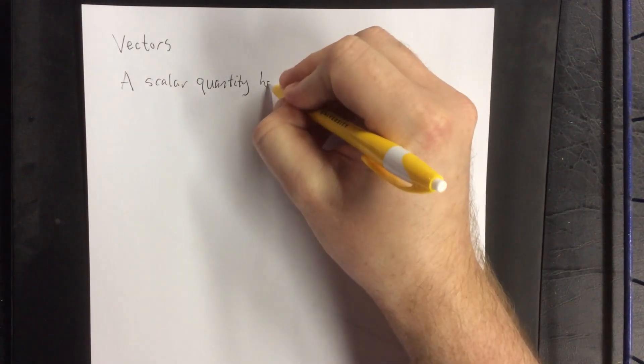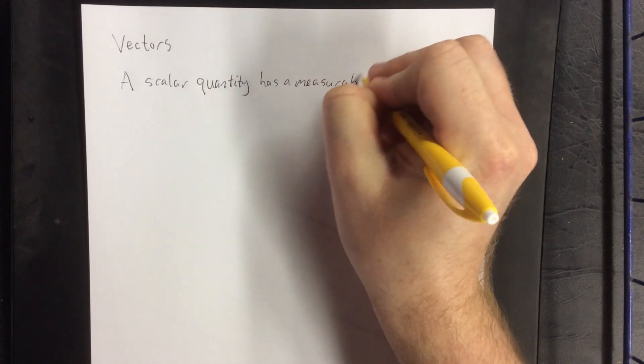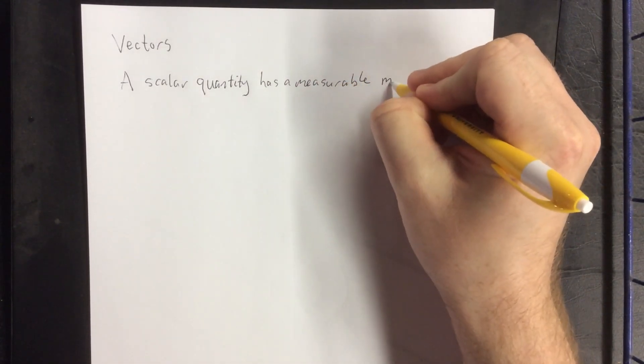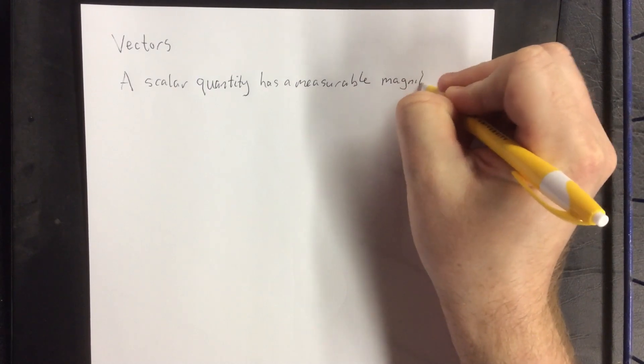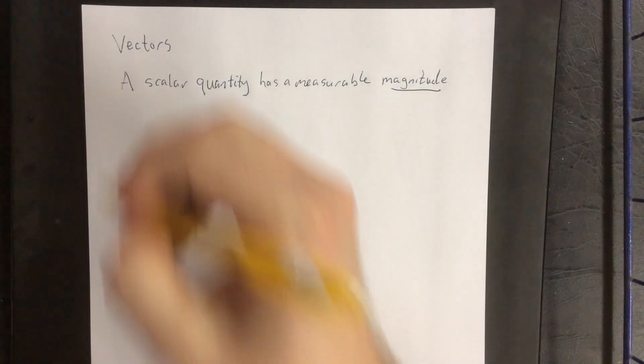A scalar quantity has a measurable magnitude. A magnitude would be like a size.